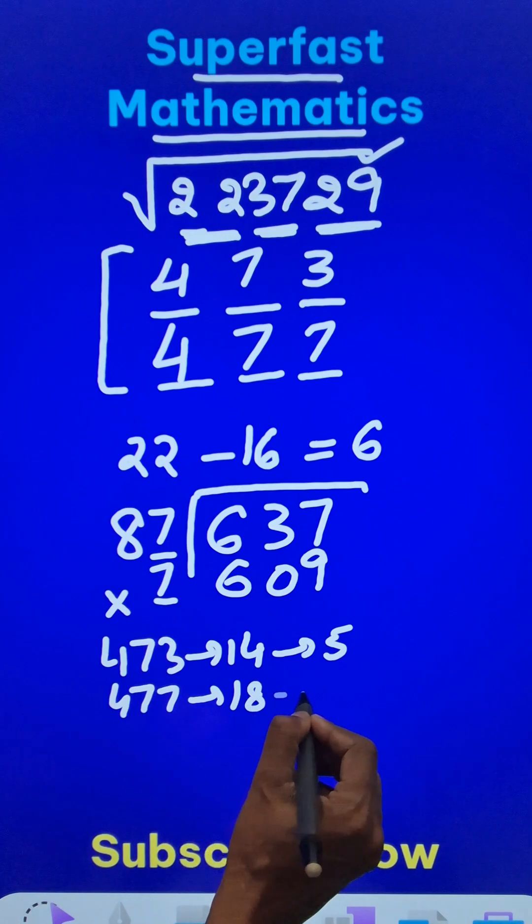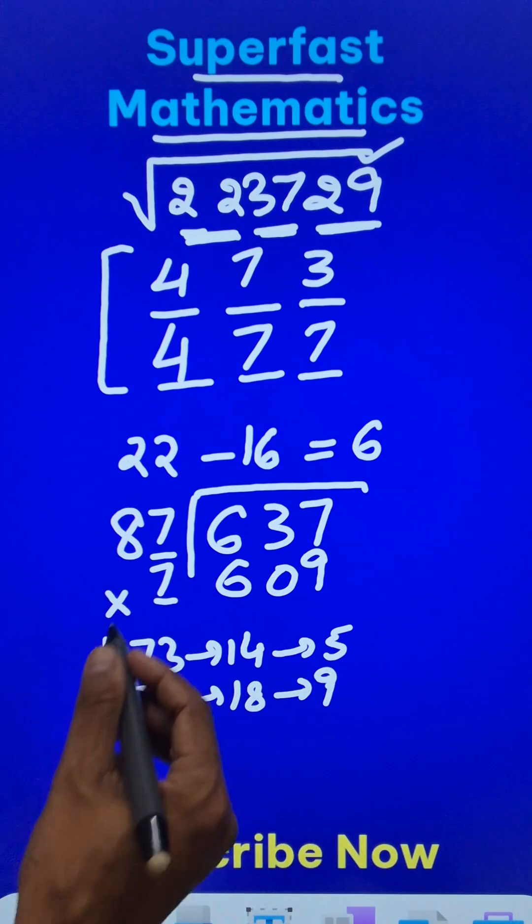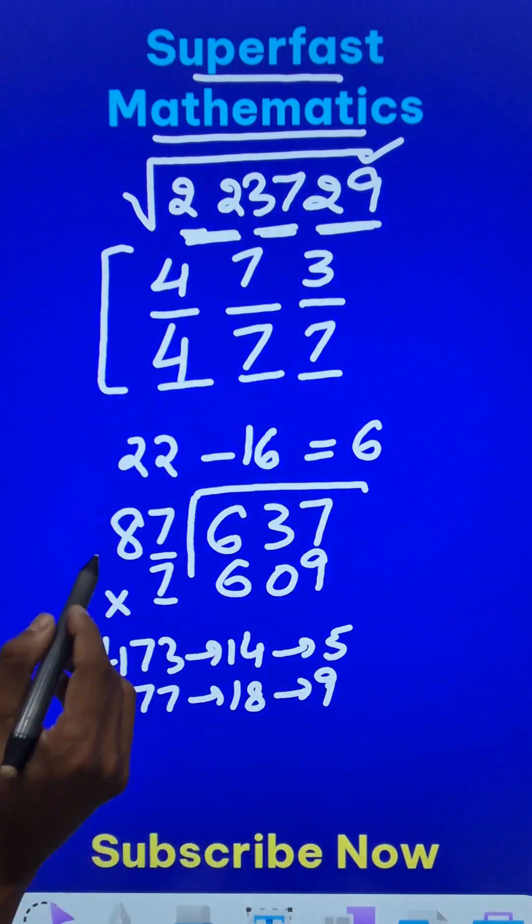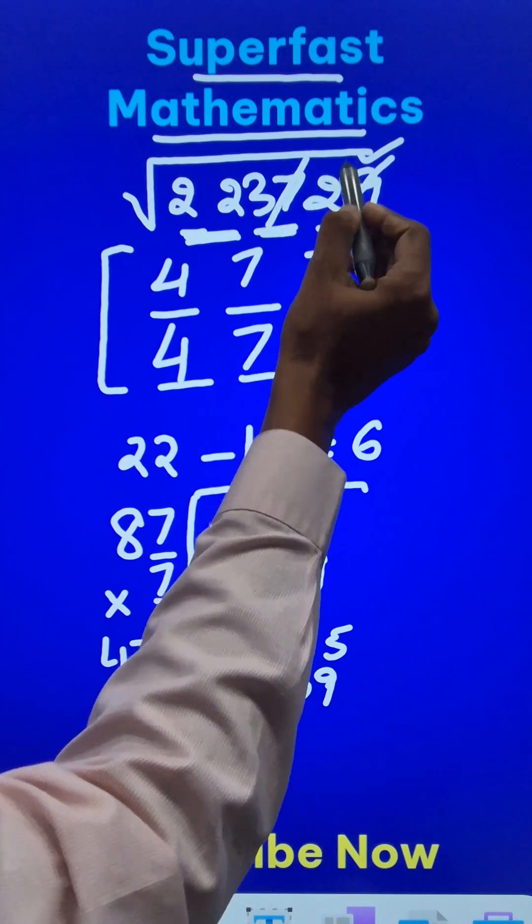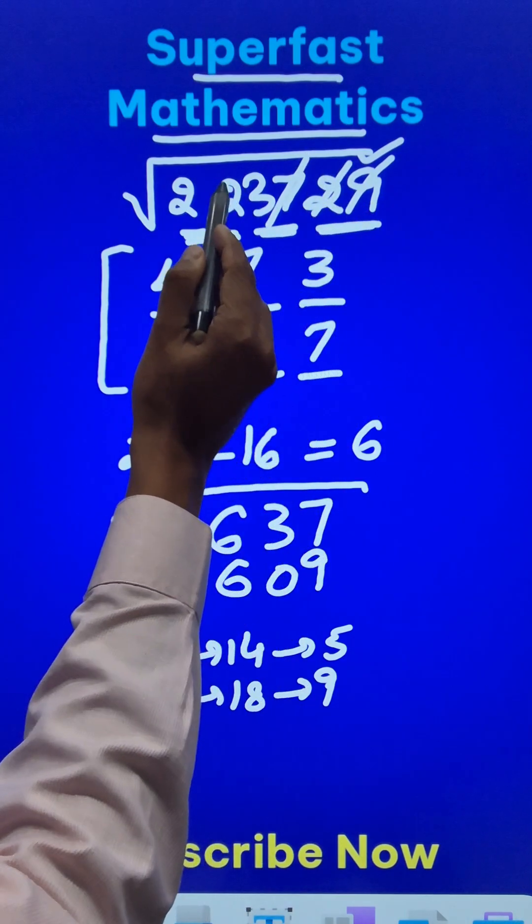Now all I need to do is to find the single digit for this number. 9 cancels out 7 and 2, 9 cancels out, 3 plus 2 plus 2 is 7. So the single digit number for this is 7.